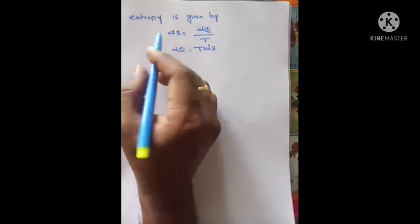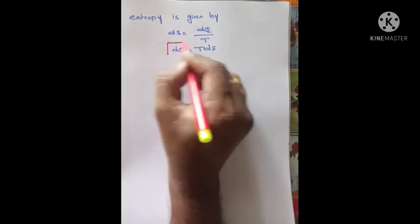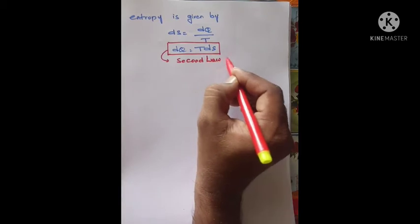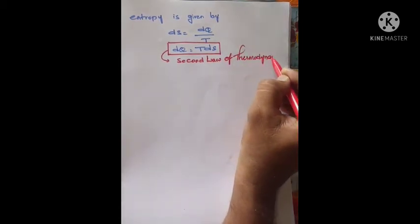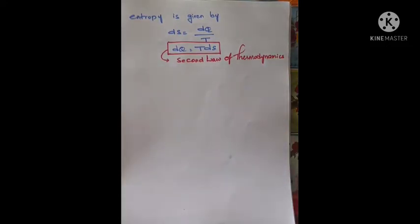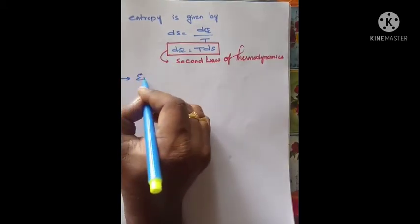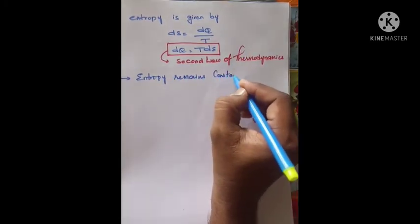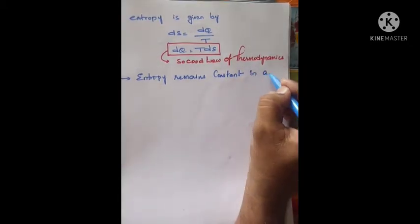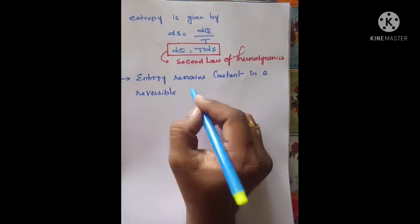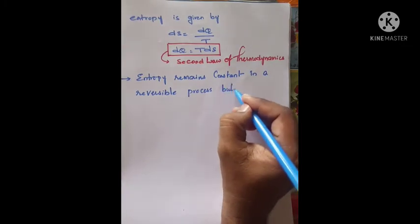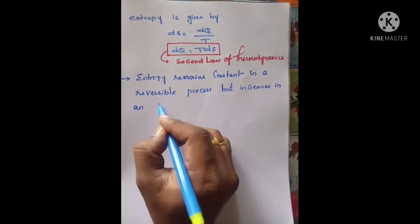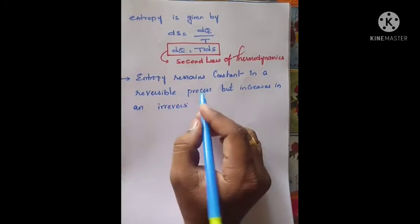This equation dQ = T·dS represents the second law of thermodynamics in terms of entropy — just as dQ = dU + P·dV. Entropy remains constant in a reversible cycle or reversible process, but it increases in an irreversible process.